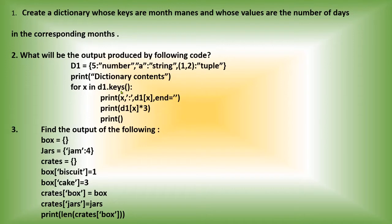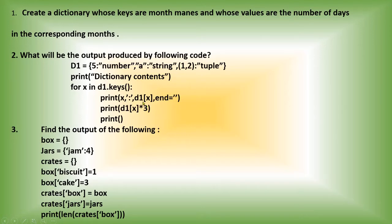The keys of dictionary d1 will be stored inside variable x. The first key is 5, so 5 will be there in x. It is written print x, so 5 will be displayed. Then colon inside single quotes — colon will be displayed as it is. Then d1[x], which is d1[5]. D1[5] means the value is 'number'. So the first print statement will give you '5 : number'. End equals to empty, so the cursor stays on the same line.